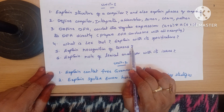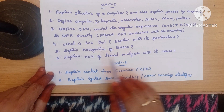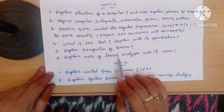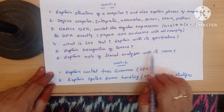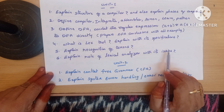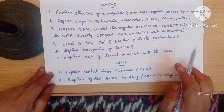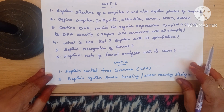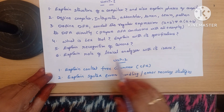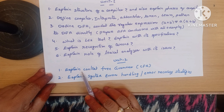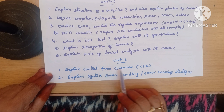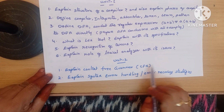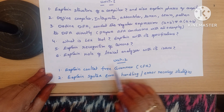Explain recognition of tokens. Explain the role of a lexical analyzer with its issues. These are the important long answer questions in Unit 1. Unit 2 long answer questions: explain context-free grammar (CFG) — in the short answer also we have define CFG, so that is also a short answer question.